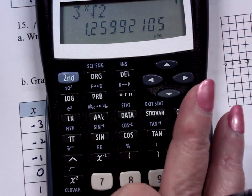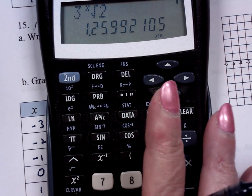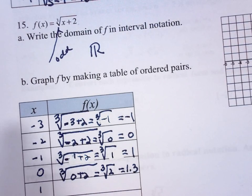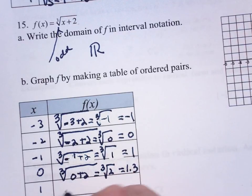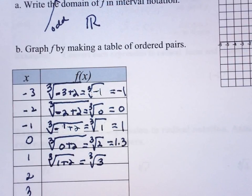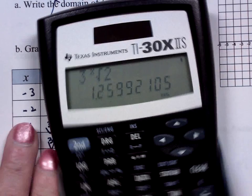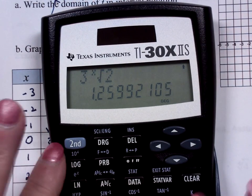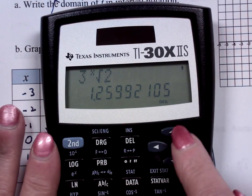You have any root that you like, because you can put any number in there that you want. So this is going to be the cube root of 1 plus 2, which is the cube root of 3. And the cube root of 3. Now, here's interesting about you guys that have the TI-30.